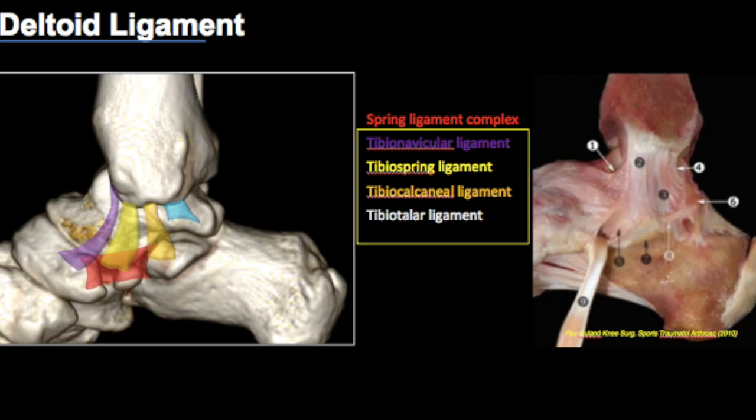The deltoid ligament is made up of the spring ligament complex, the tibionavicular ligament, tibiospring ligament, tibiocalcaneal ligament, and the tibiotalar ligament. Now all these structures are nice to discuss theoretically; however, when we look at the deltoid ligament as a gross structure, we may or may not be able to identify all the various components.